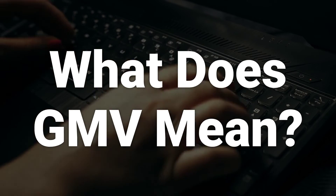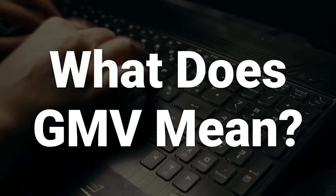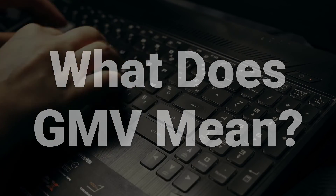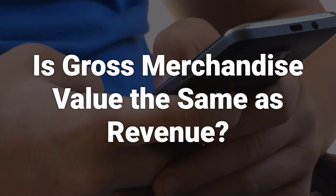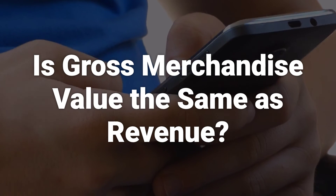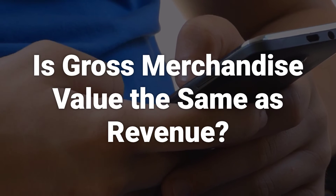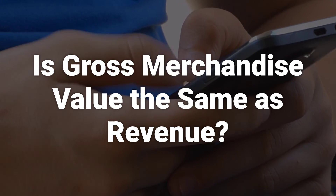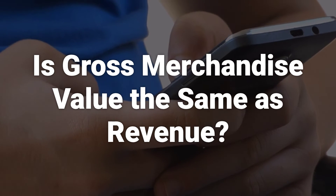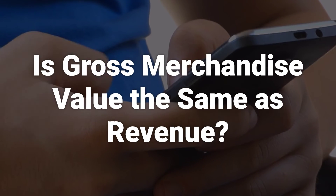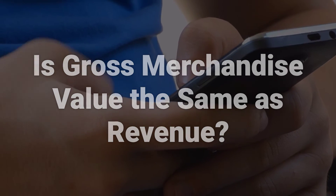GMV refers to the total value of merchandise sold over a given period of time through a customer-to-customer exchange site. Depending on the type of e-commerce site, GMV is the same as gross revenue. However, for sites like eBay, it reflects the total value of goods sold but not the actual revenue the company makes, as a portion of those revenues goes to the sellers of the goods.